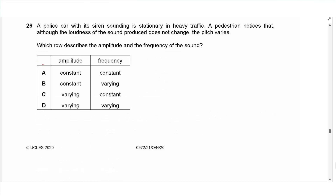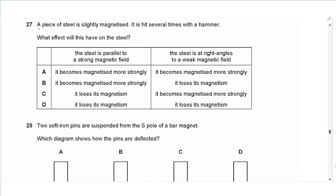Question 26 says: a police car with its siren sounding is stationary in heavy traffic. A pedestrian notices that although the loudness does not change, the pitch varies. Loudness is related to amplitude — loudness does not change so amplitude is constant. Frequency is related to pitch — that is varying. The answer is B.